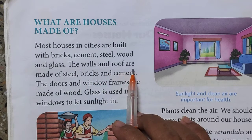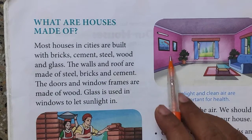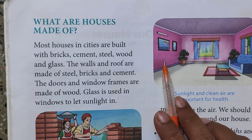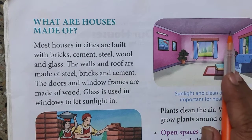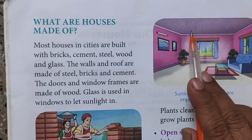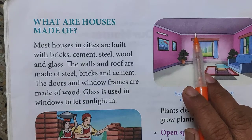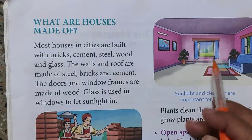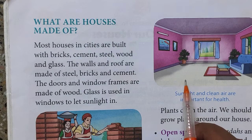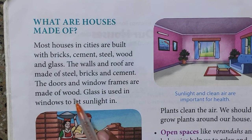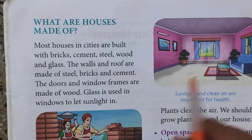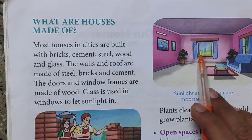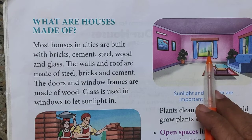The walls and the roofs are made of steel, bricks and cement. If you can see the picture of the building, the roof is also made of concrete which contains steel, cement, gravel and sand. The doors and window frames are made of wood. Glass is used in the windows to let the sunlight in, and the windows are covered with glass panes so that sunlight can pass through.